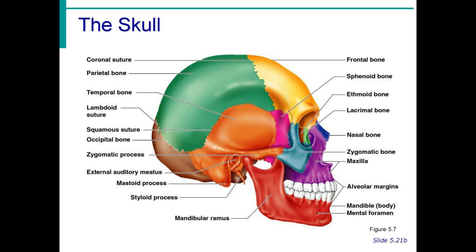The cranial bones are connected by sutures. The frontal bone is connected to the parietal bone by the coronal suture. The parietal bone is connected to the temporal bone by the squamosal or squamous suture. The parietal bone is connected to the occipital bone by the lambdoid or lambdoidal suture. The left and right parietal bones are connected to each other by the sagittal suture, which is not shown in the illustration.